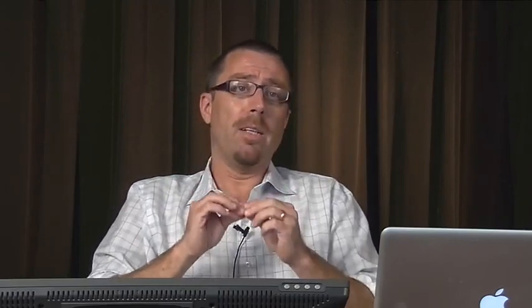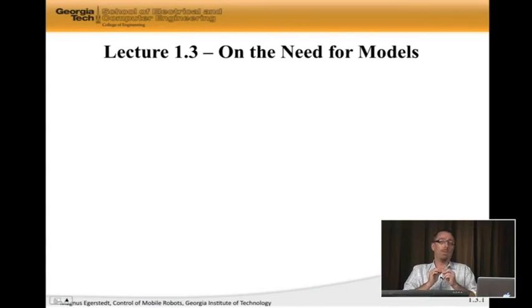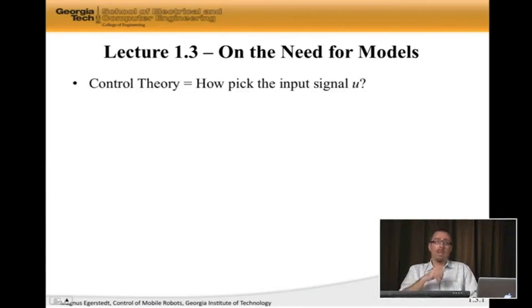One thing that we're going to need in order to do this is come up with models. Models are going to be an approximation and an abstraction of what the actual system is doing, and the control design is going to be made relative to that model and then deployed on the real system. But without models, we can't really do much in terms of control design. We would just be stabbing in the dark without knowing what's going on. So models are actually key when it comes to designing controllers.